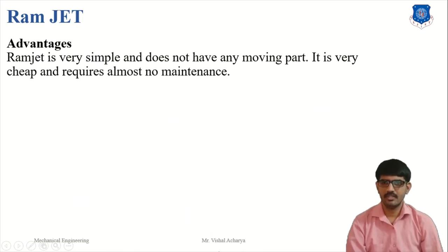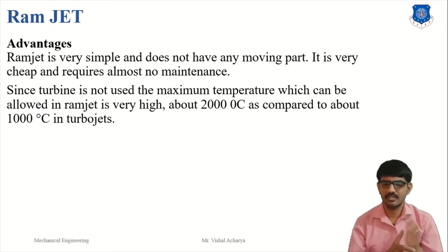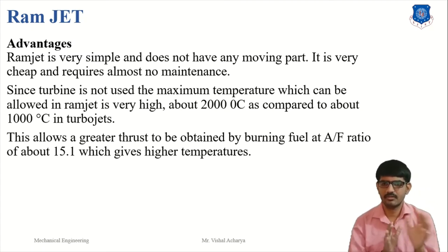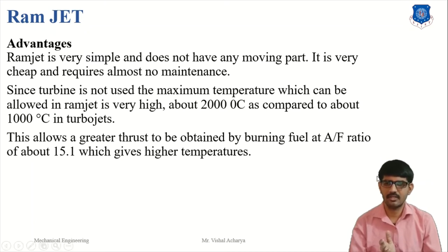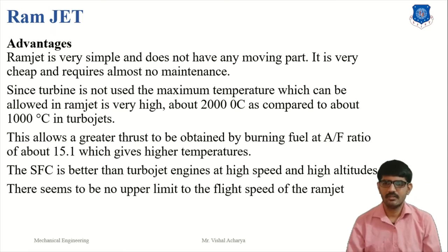The advantages of the ramjet: the ramjet is very simple and does not have any moving parts, so it is very cheap and requires almost no maintenance. Since the turbine is not used, the maximum temperature which can be allowed in a ramjet is very high — about 2000 degrees Celsius compared to about 1000 degrees Celsius in a turbojet. This allows greater thrust to be obtained by burning of fuel, and the axial ratio is about 15:1 with higher temperature, making it more efficient than the turbojet. The specific fuel consumption is better than the turbojet engine at higher speed and higher altitudes. There seems to be no upper limit to the flight speed of the ramjet.